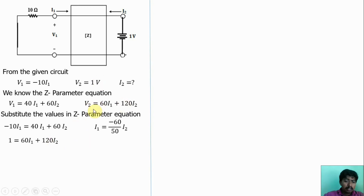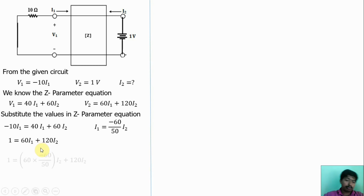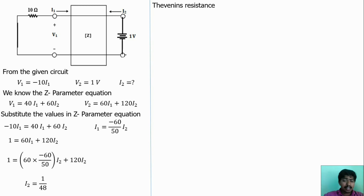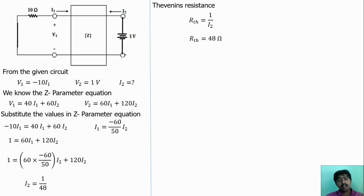Substituting V2 = 1 and the relationship between I1 and I2 into the second equation: 1 = 60·I1 + 120·I2. Replacing I1 gives I2 = 1/48. Therefore RTH = 1/I2 = 48 Ω. Thevenin resistance calculation is complete.